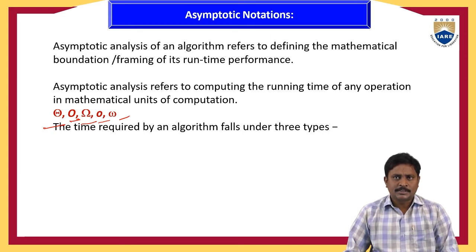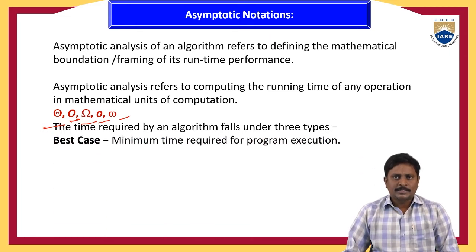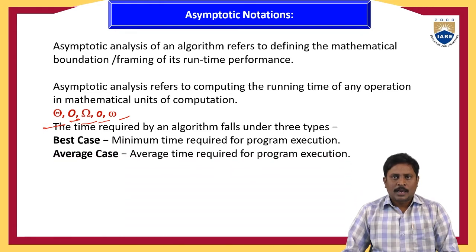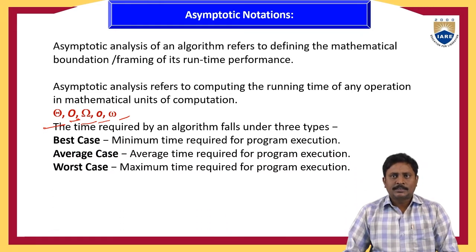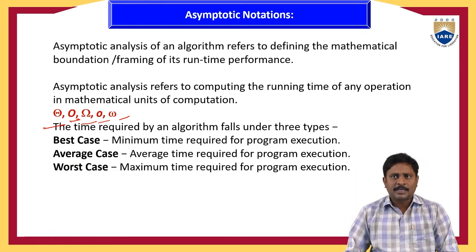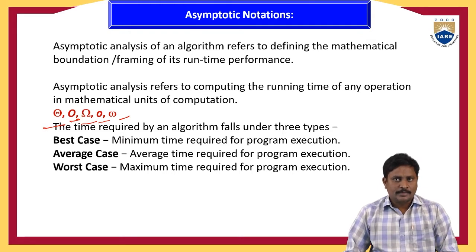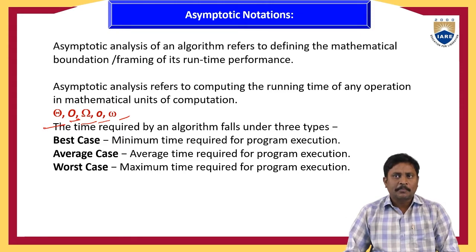The time required by an algorithm falls under three types: best case, average case, and worst case. Best case means minimum time required for program execution. Average case means average time required for program execution. Worst case means maximum time required for program execution.